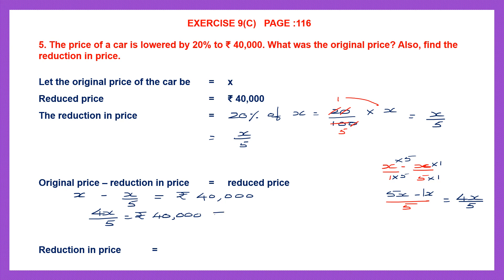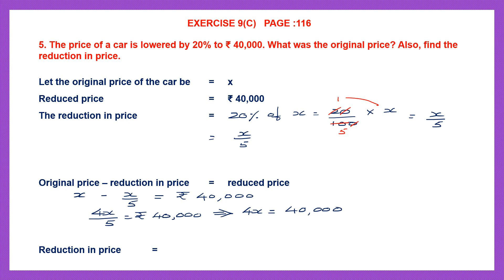So we have 4x by 5 equal to 40,000 rupees. Now we are going to solve for x. Let's leave 4x on the left hand side. On the right we have 40,000. We transpose the 5 from the left to the right — here it is division, so when it goes to the right it becomes multiplication. So now we have 4x equal to 40,000 into 5.